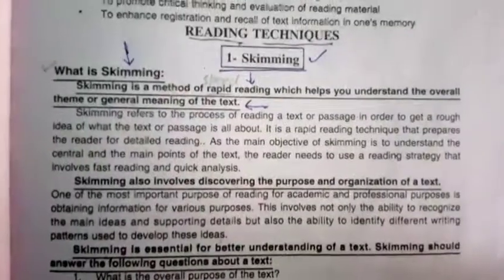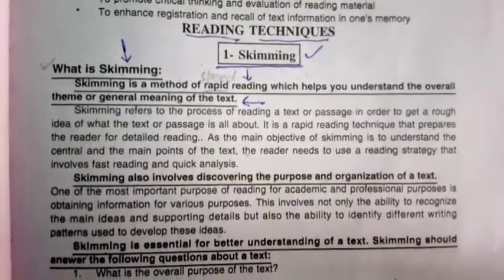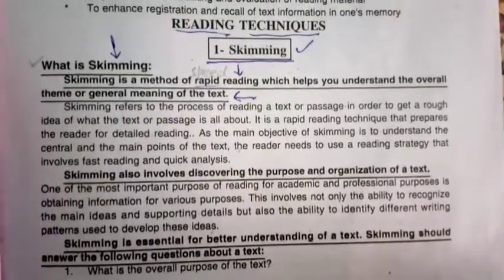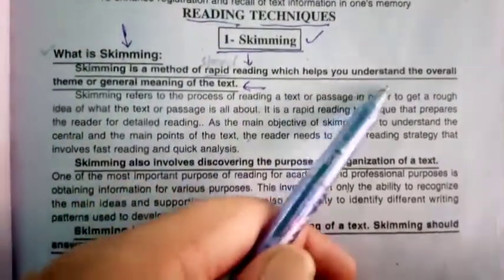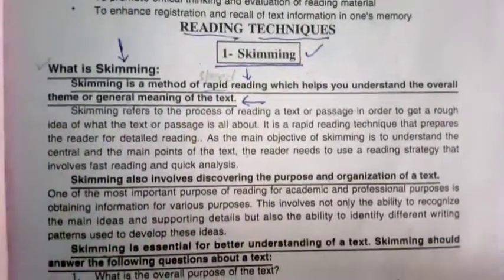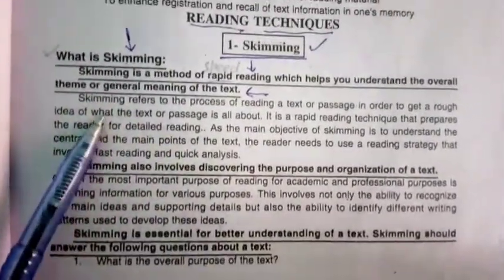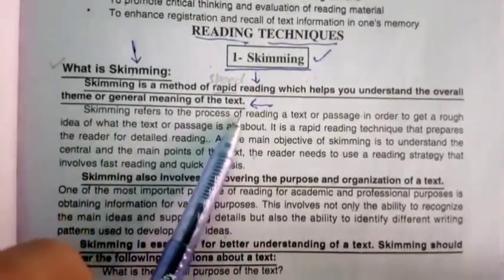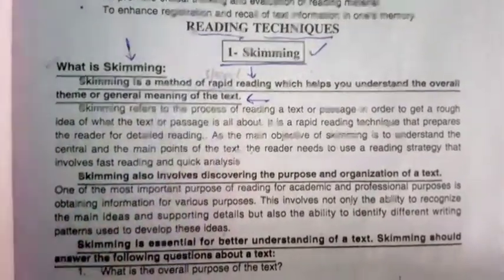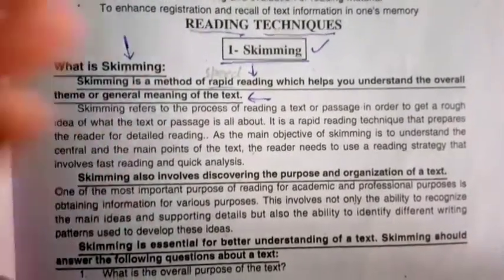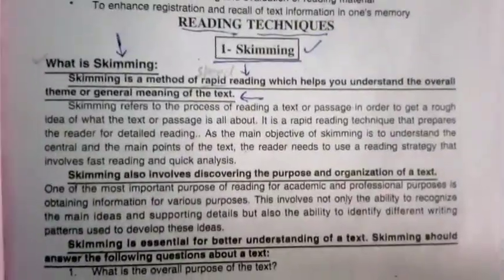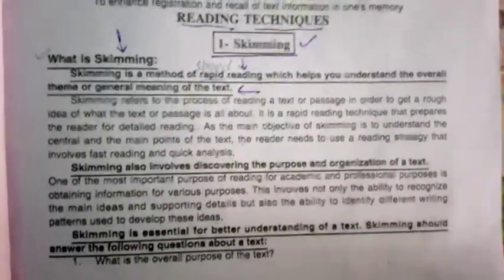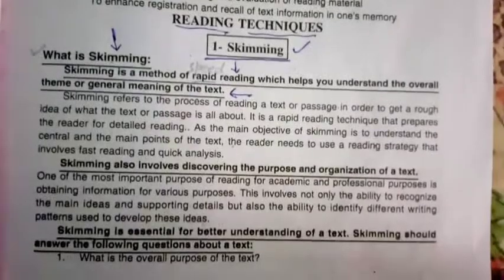Scheming is actually a method of fastest reading with speed. It helps you to understand the overall theme or general meaning of the text, and after that you will read it slowly. But first of all, Scheming is a technique for reading — you have to read the whole paragraph in just 7, 8, 10, 12, or 14 seconds, just for knowing the exact meaning.